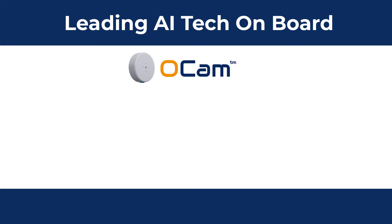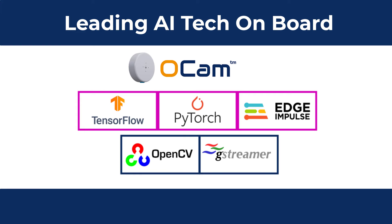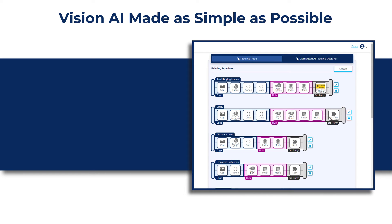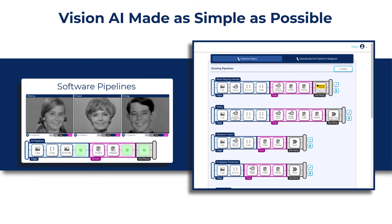Of course we've smoothly integrated all the leading AI technologies so you don't have to. AI can be a scary big set of technologies, but you don't have to worry. OCAM gives you all the power through a simple graphical interface to select already built pipelines that will do everything for you. Just tell it what you're interested in and OCAM will do the rest.